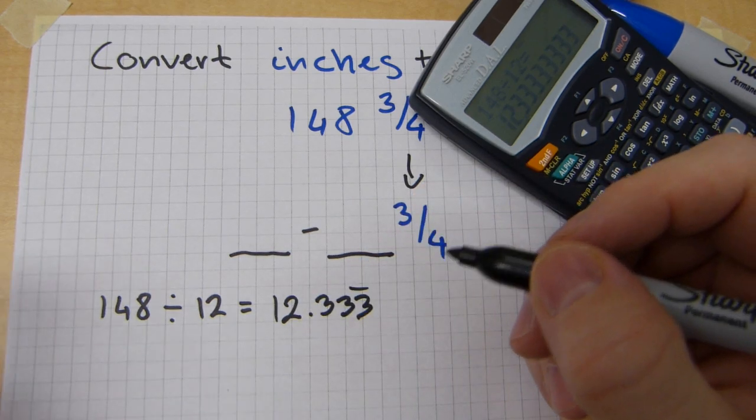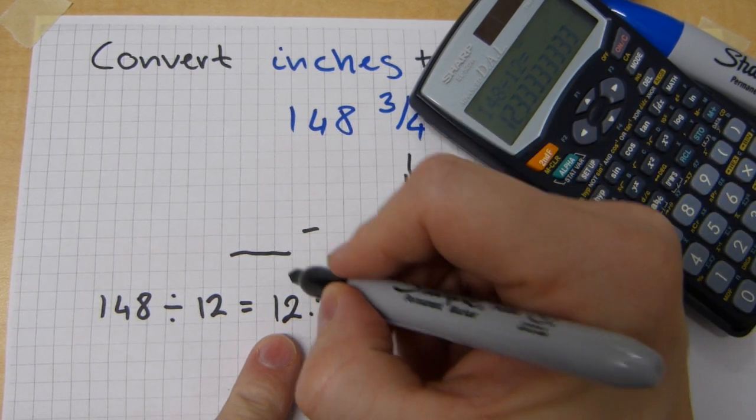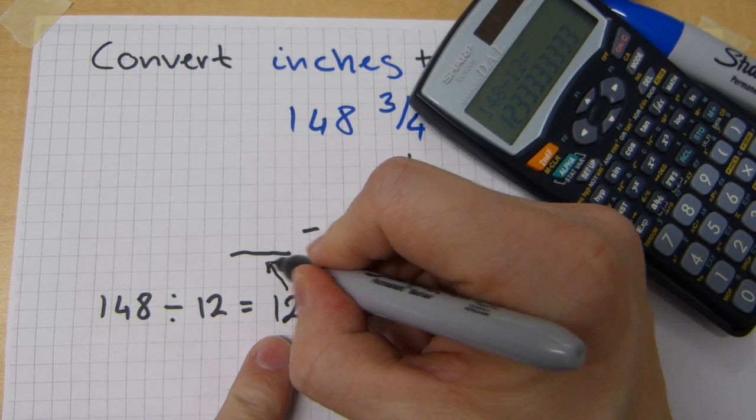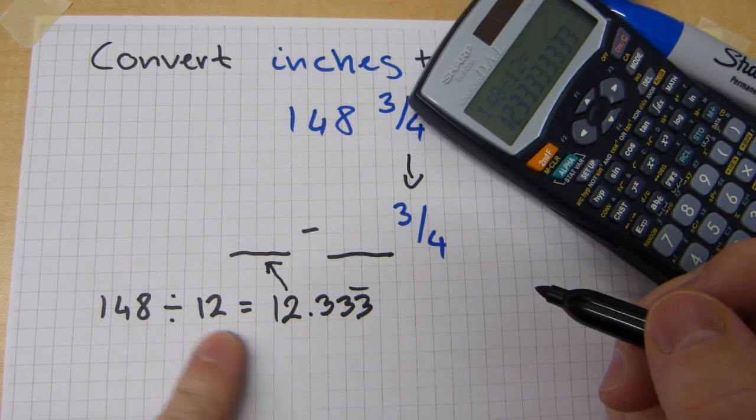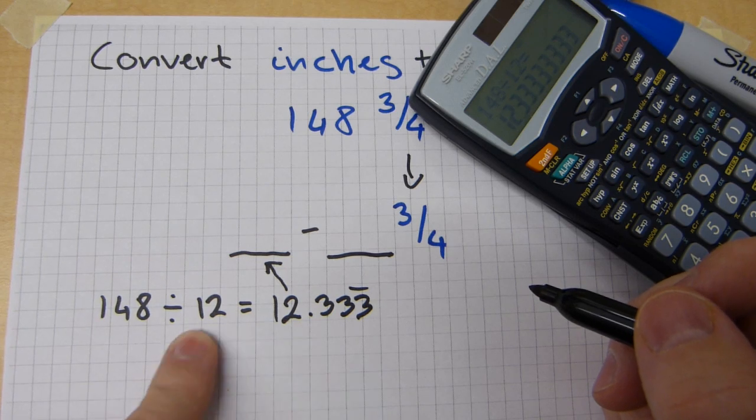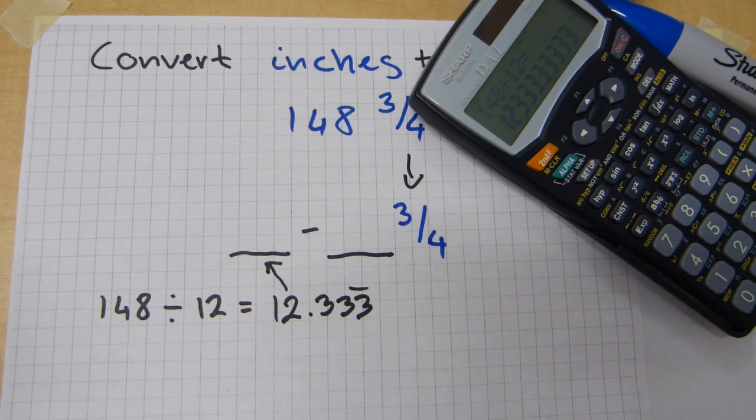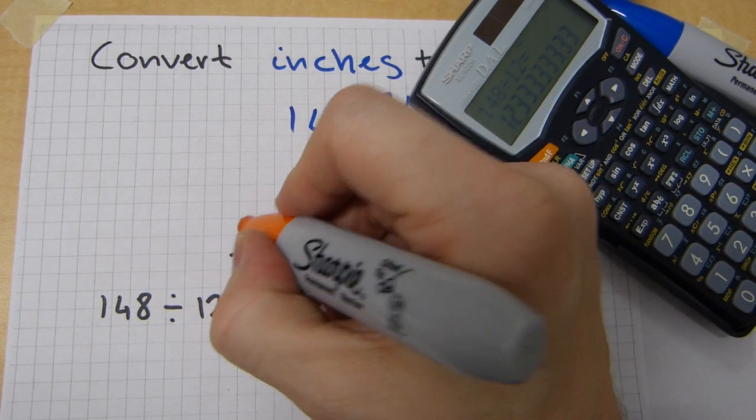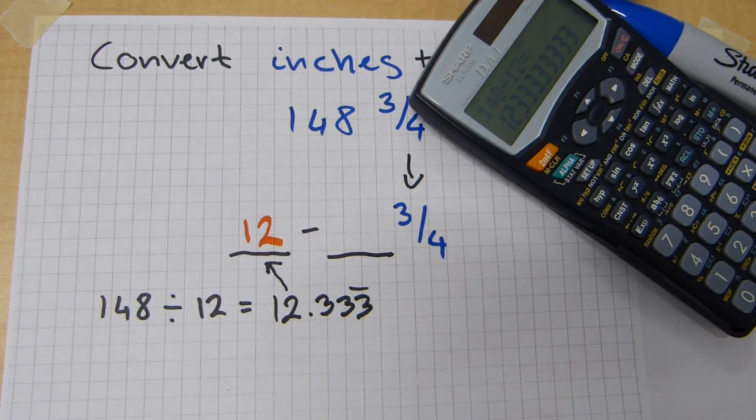This 12 here in the final answer copies there to the feet number. That 12 is completely different from that 12. They happen to be both 12s, but they have nothing to do with each other. The number of feet is gonna be 12 plus change.